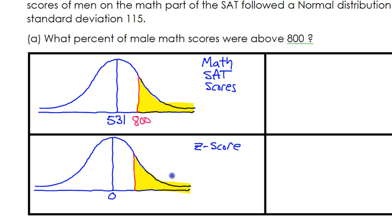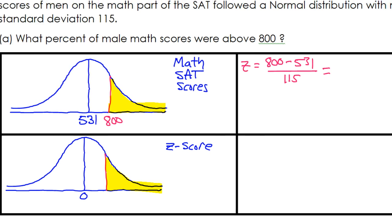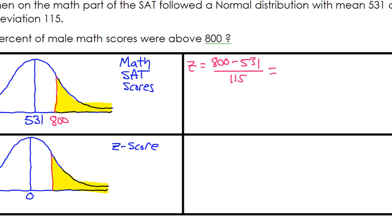So we need the z-score, so let's calculate that. We will have a z-score that will be the value of 800 minus the mean, 531, divided by the standard deviation of 115. Just put that in your calculator. That's giving me a z-score of 2.34. Let's go ahead and put that in the picture here, 2.34.